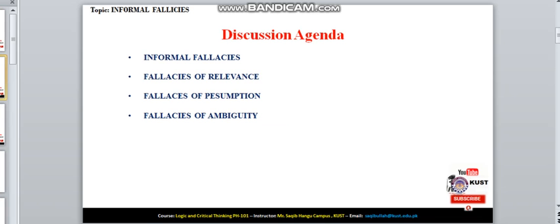Now coming to the discussion agenda. In this lecture we will cover the following points. The first point is what is Informal Fallacies. Then kinds of Informal Fallacies like Fallacies of Relevance, Fallacies of Presumption, and Fallacies of Ambiguity.